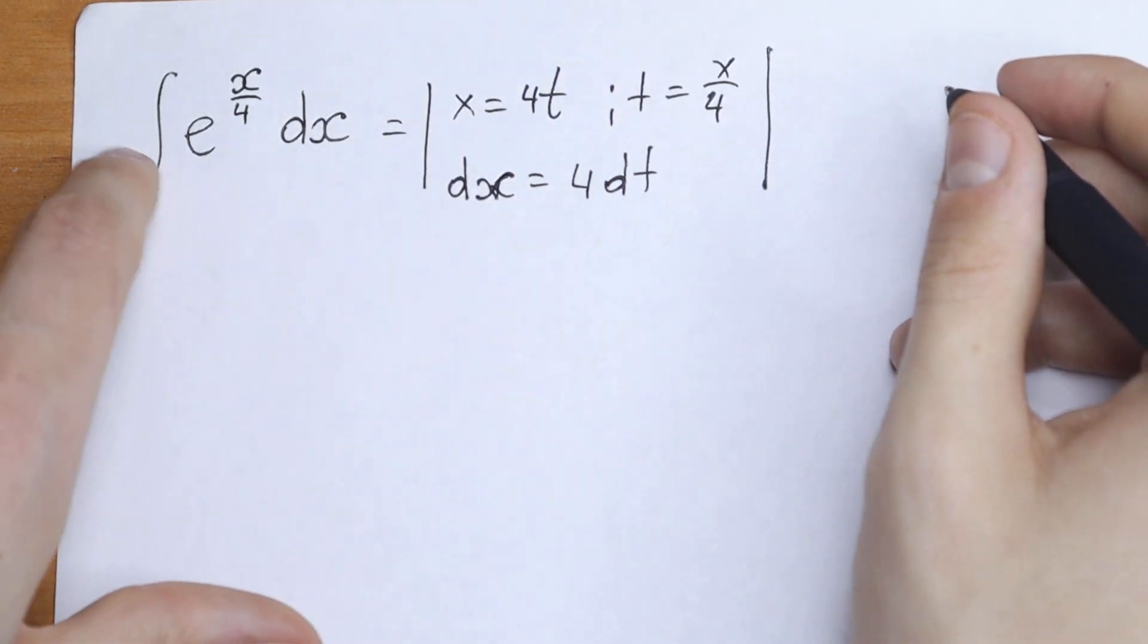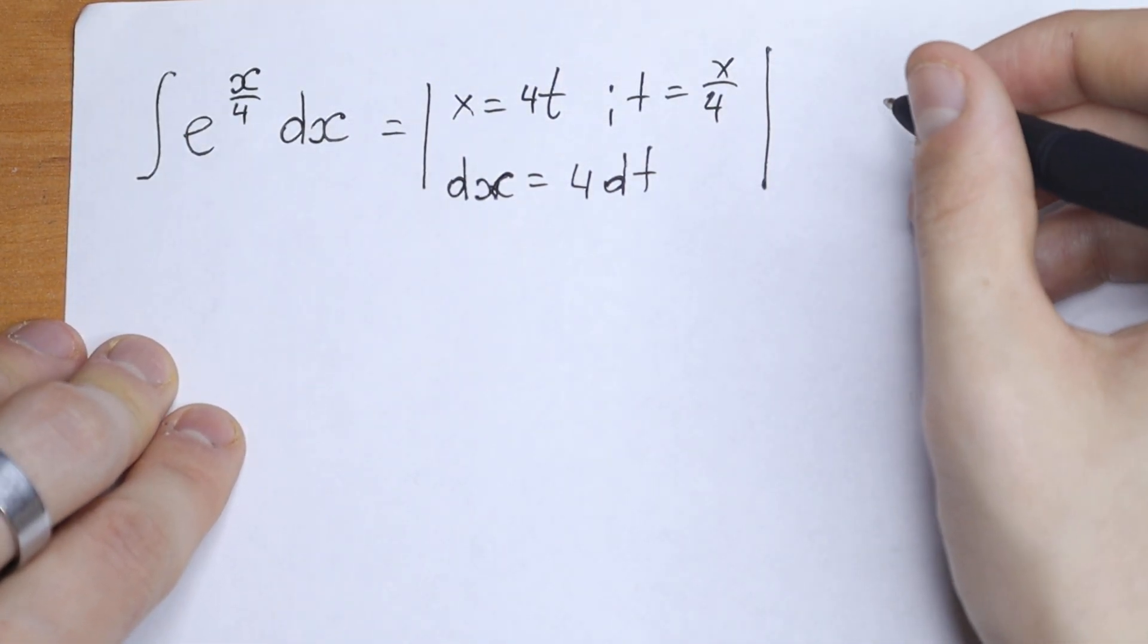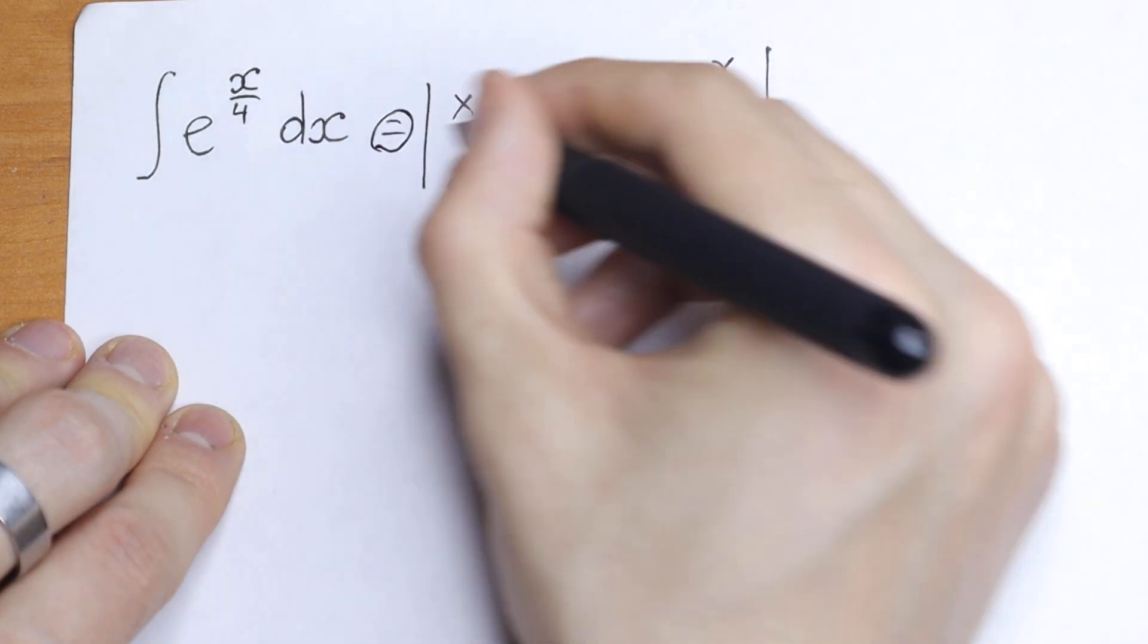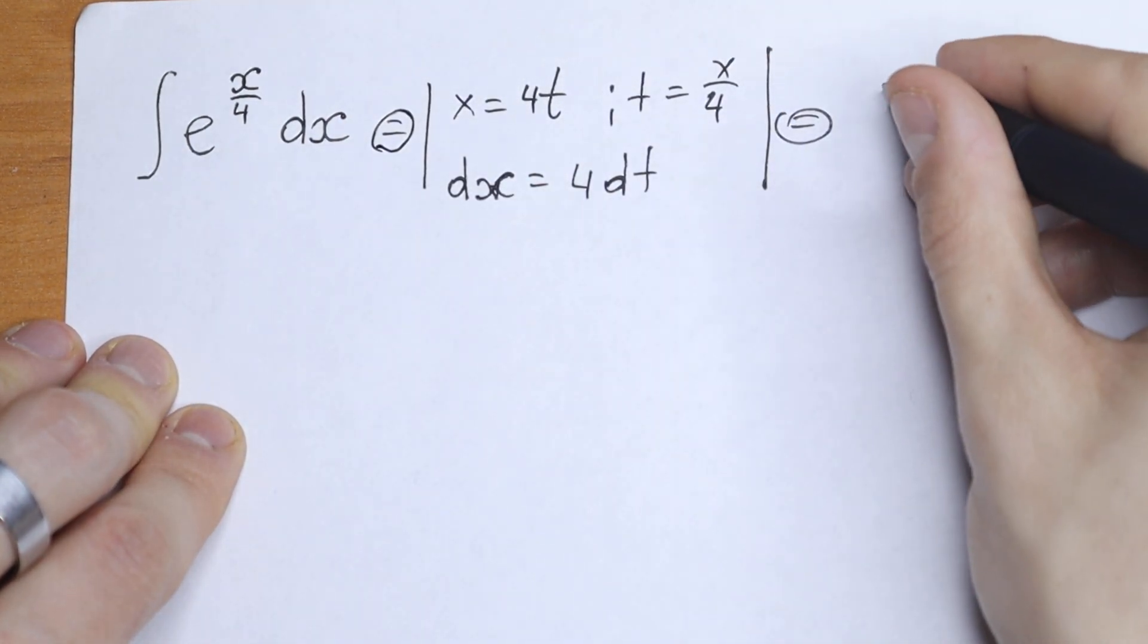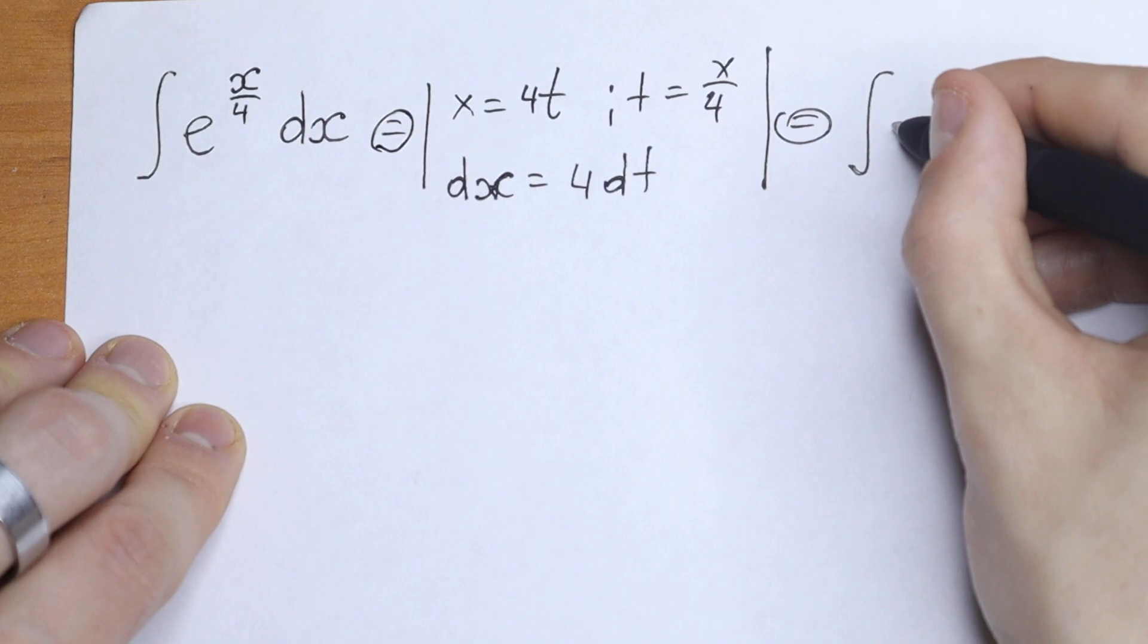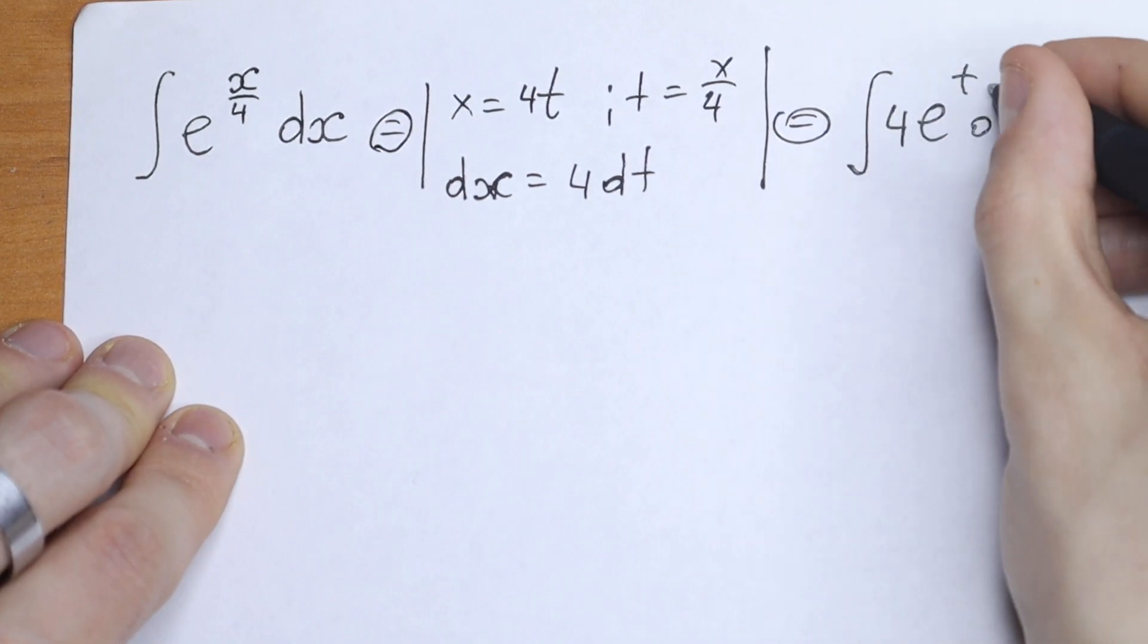Let's put all of these elements into our integral. As a result, this integral will be equal to the integral of 4e to the power t dt.